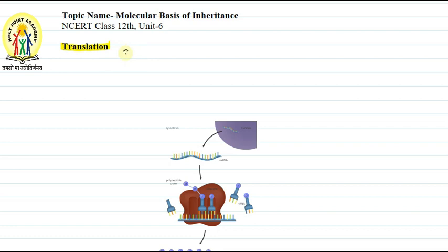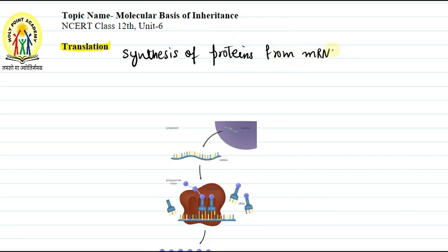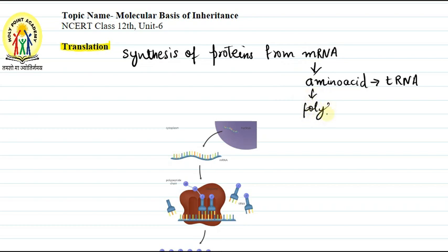What is translation? Translation is the synthesis of proteins from mRNA. mRNA contains all the genetic information. This genetic information is translated into the amino acid sequence with the help of tRNA molecules. The amino acids join together to form polypeptides.